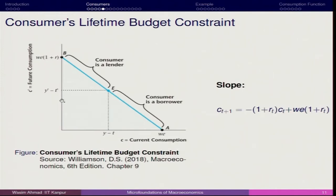Here you have to note two things. This bracket shows that from B to E, the representative consumer is a lender, and from E to A, the representative consumer is a borrower. Here we are defining the boundary for this representative consumer. If the consumer is at a point where future consumption is this much and current consumption is this much, it means the representative consumer will have to go for extra borrowing. But if current period consumption is less than income, the consumer saves that amount and can transfer it to the future period.